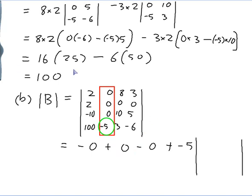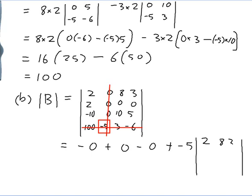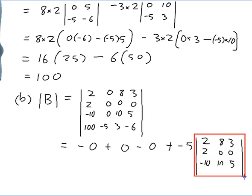I focus on the entry where I am, cross out the row and column that I'm in, and write down what's left. The remaining 3x3 matrix is: 2, 8, 3 / 2, 0, 0 / minus 10, 10, 5.